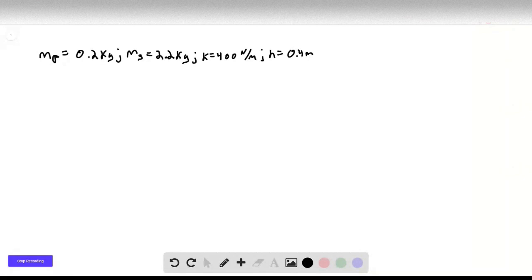Okay, let's start by going over the constants given to us. So the mass of the pan is 0.2 kilograms, mass of the steak is 2.2 kilograms, K equals 400 newtons per meter, and the height is 0.4 meters.